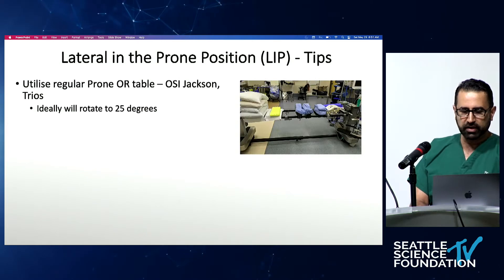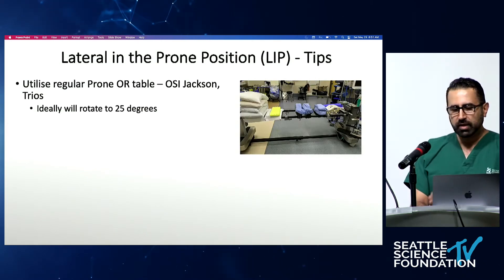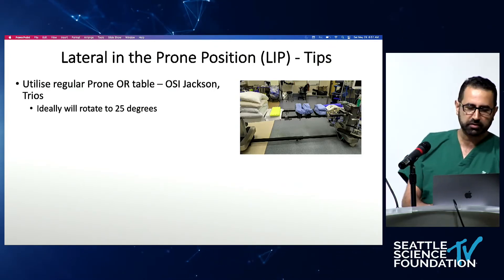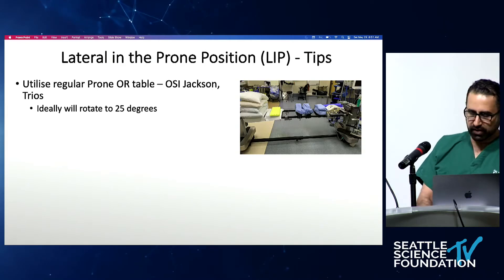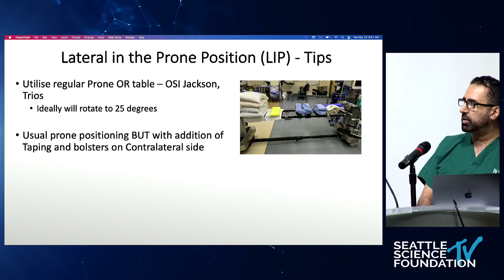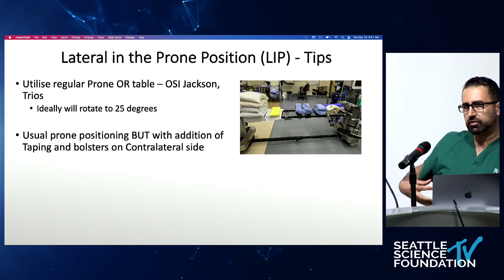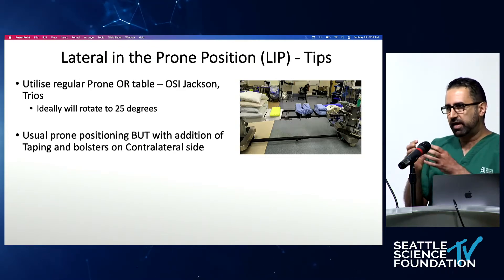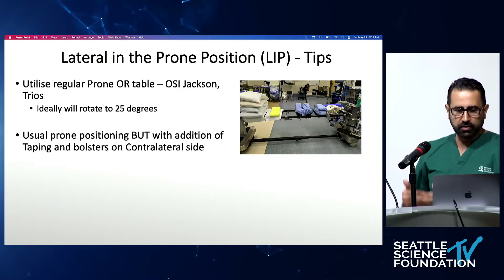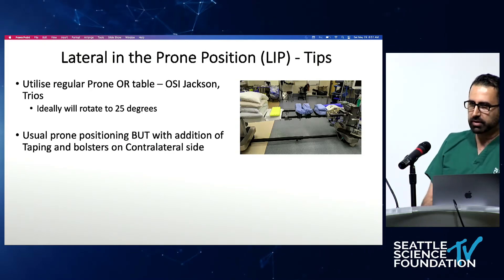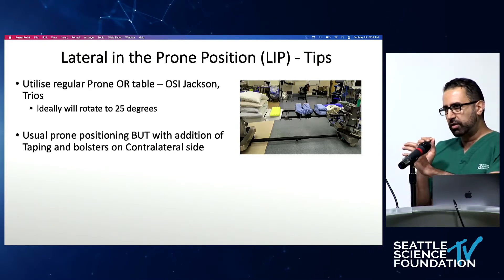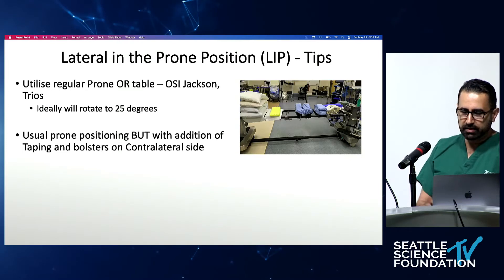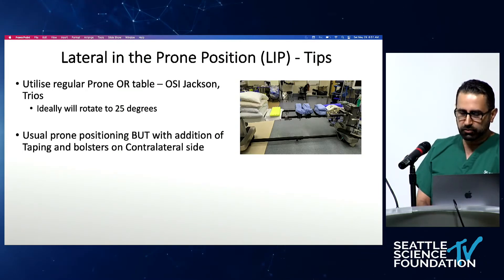Some technique tips: we use the Jackson table; the TRIOS gives a numerical figure for bed rotation, providing about 25 degrees. We position them prone but add bolsters to the contralateral chest and hips together with taping to prevent lateral translation of the patient as we work. This also reduces retractor movement during disc preparation and interbody placement.